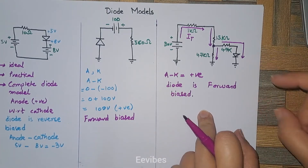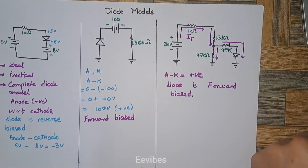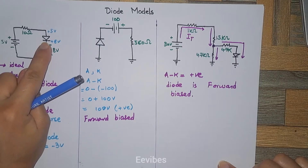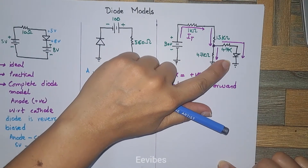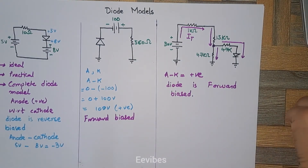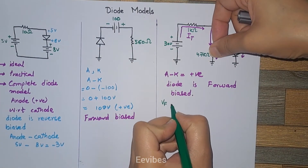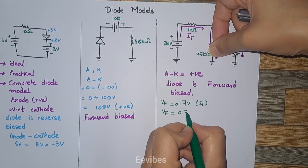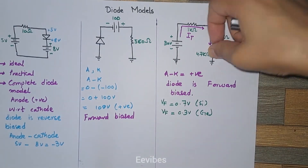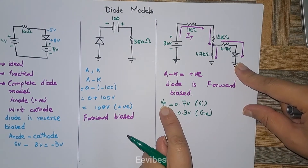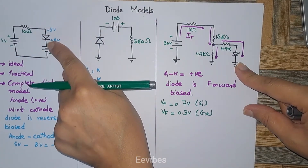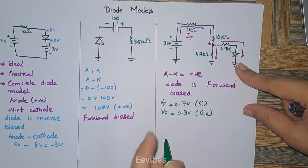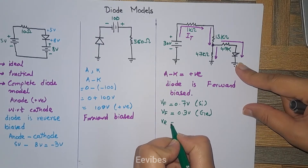The second part asks us to determine the voltage across each diode assuming the practical diode model. When we consider the practical diode model, the forward voltage drop equals 0.7 volts for silicon and 0.3 volts for germanium. For now, we consider a silicon diode, so whenever it is forward biased and conducting, the voltage across its terminals will equal 0.7 volts.